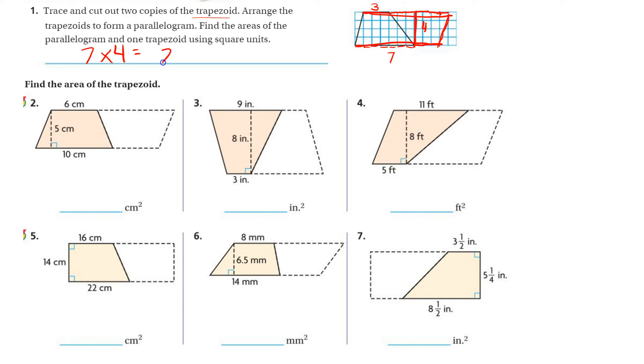Which equals 28, and then the area of the trapezoid would be half of that, times one-half or times 0.5. Half of 28 is 14, so it's 14 units squared. And that's it, guys, that's all you're doing.